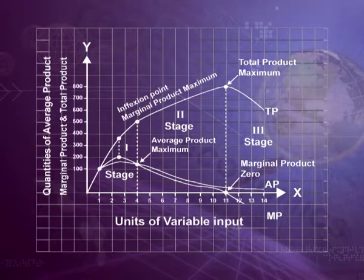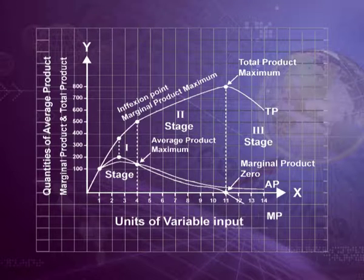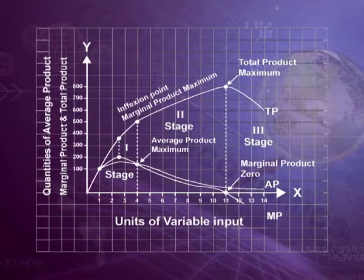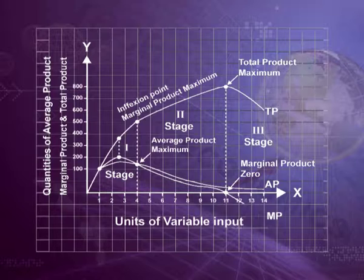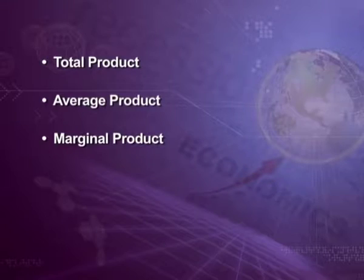This diagram can be divided into three stages. Stage 1 ends at the 4th unit where average product is maximum at 110 units and marginal product is equal to average product at this point. Second stage ends at the 11th unit where marginal product becomes 0 and total product is maximum and constant. After the 11th unit, the third stage begins. Before understanding the three stages, we should understand the three technical terms: total product, average product, and marginal product.